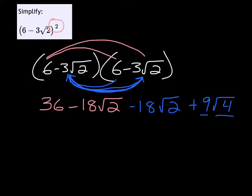All right, so let's simplify this up here. We've got this 36, and then these two root 2's here, this negative 18 root 2 twice, together that will give us negative 36 root 2.